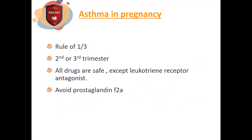Asthma and pregnancy: one third of patients will have improvement in symptoms, another third will have more exacerbations, and another third will have no change in their asthma course. Exacerbations typically occur in the second or third trimester. All asthmatic drugs are safe in pregnancy, but leukotriene receptor antagonists should not be newly started. However, if she was already in good control using leukotriene receptor antagonists, she can continue, as asthma control in pregnancy is important. Uncontrolled asthma affects the child, causing low birth weight. Prostaglandin F2-alpha, used for postpartum hemorrhage, causes bronchoconstriction and therefore should not be used in asthmatic patients.